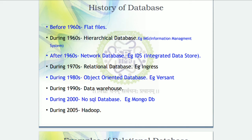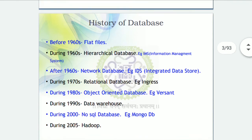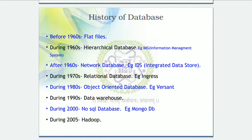After the hierarchical database, another kind of database came into existence — the network database — with Integrated Data Store (IDS) as an example. It also had drawbacks, and to overcome these, the relational database became popular during the 1970s, with Ingres as one example. Oracle, MySQL, and SQL Server are all examples of relational databases. The relational database is very popular because it stores data in the form of tables.